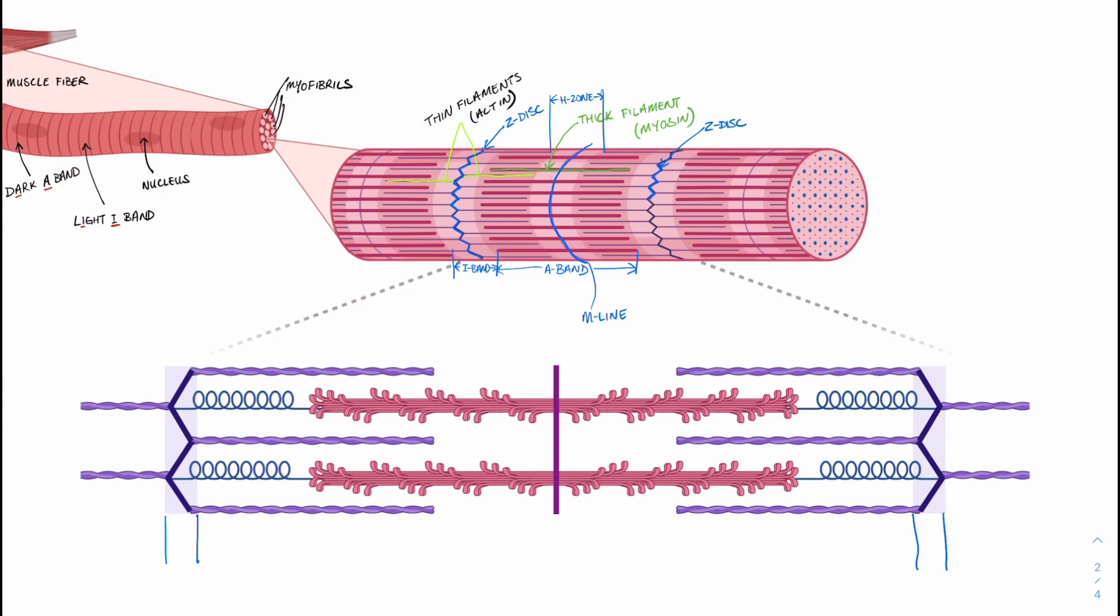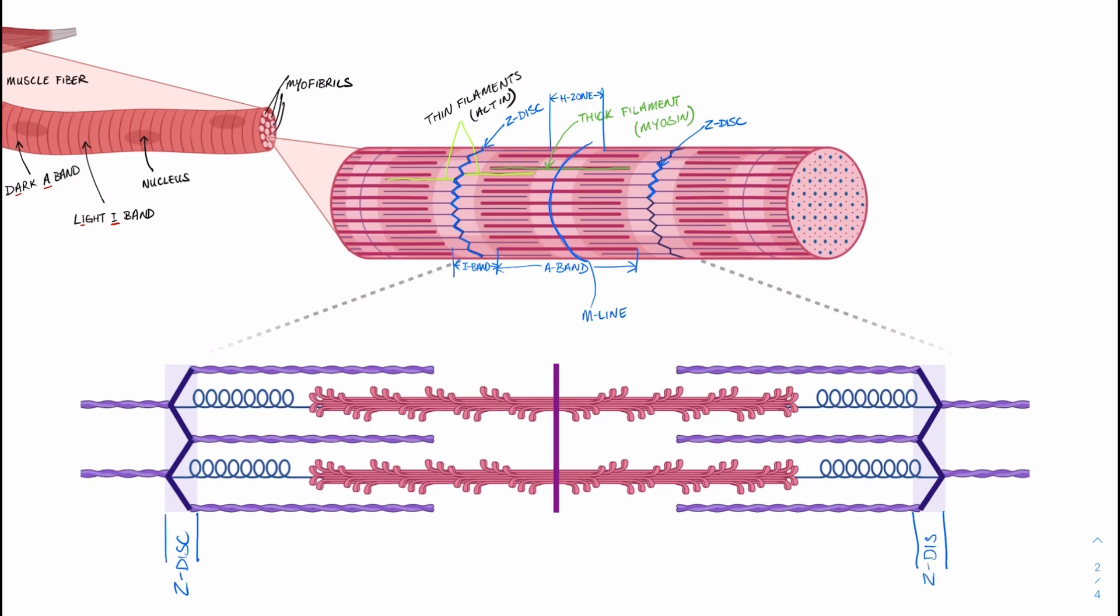We'll label the Z discs on either side—that's that zigzaggy structure on either side. In between that, that'll be our functional unit, the sarcomere. Once again, in the middle, M for middle, M for M line. We have our thick filament, that weird funky-looking strand in the middle, that'll be our myosin. Our thin filament in purple looks more like a helical structure that is indeed thinner. We also have a third filament that we need to know, and that's our elastic filament, which is composed of the protein titin.